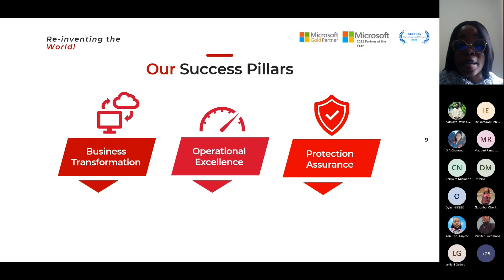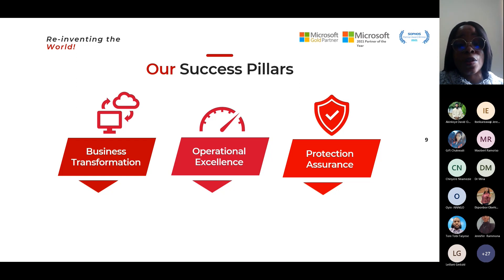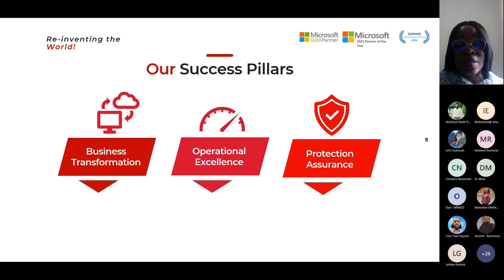We have what we call our success pillars. For business transformation, we help you to transform your business digitally, thereby lowering your cost, improving your efficiency, and maximizing your productivity. For operational excellence, we identify it as the way people, data, systems, and processes interlace to achieve productivity. For protection assurance, we understand that every organization wants to protect their data — here we sell peace of mind as a service.